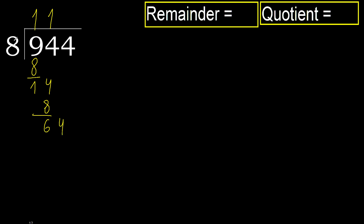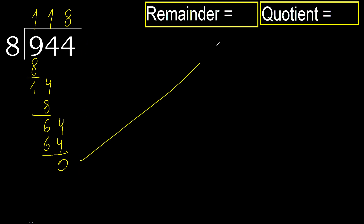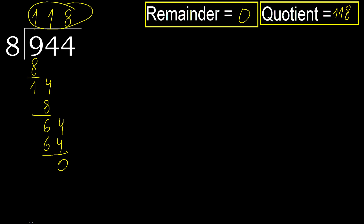64. 8 multiplied by 8 is 64. It is not greater. Subtract. Next, there is no number, therefore finish it. Ok, remainder 0, therefore 944 divided by 8 is done here.